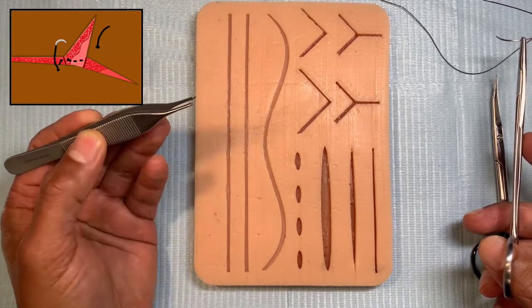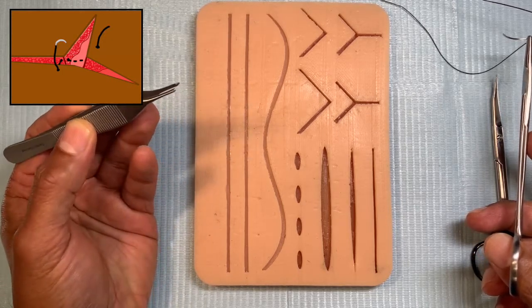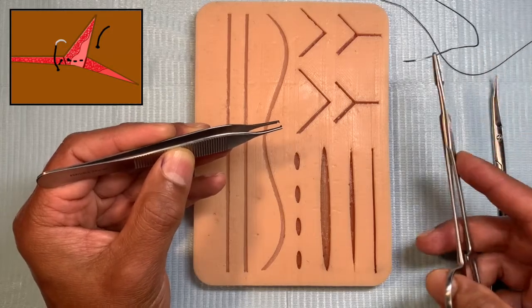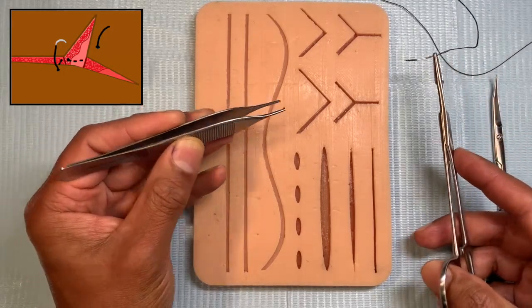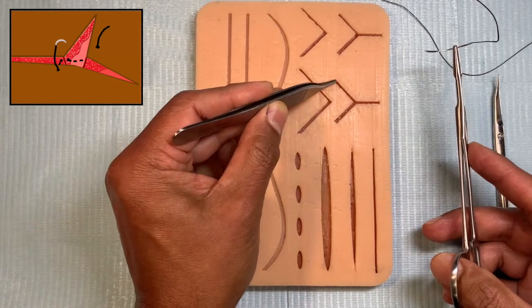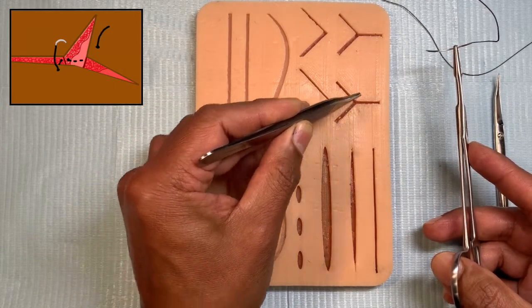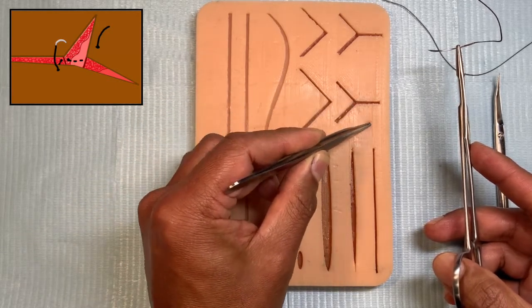So the three-point suture, also called the army navy suture because it goes above the skin and below the skin, is a good option for this. What you're basically doing in a three-point is creating an inverted triangle configuration for the suture.